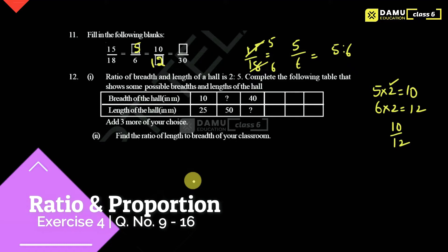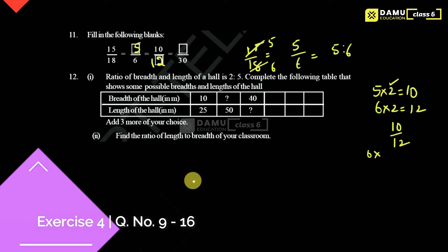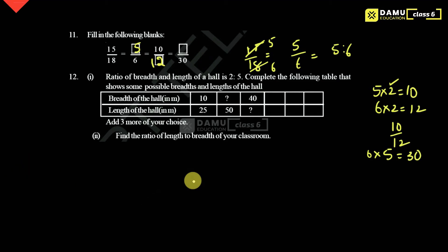Then what we have to multiply with 6 in order to get 30? So 6 fives are 30. Then here 5 is constant, so 6 is there. For that 5, this is the least one. What we have to multiply with 5 to get 25? This is 25. That is 25.